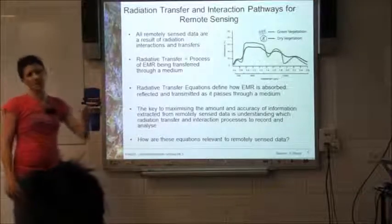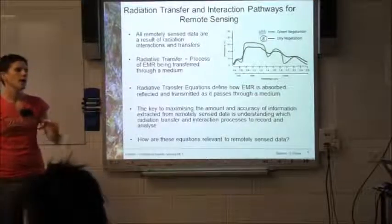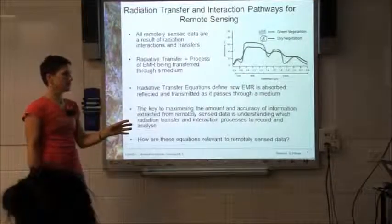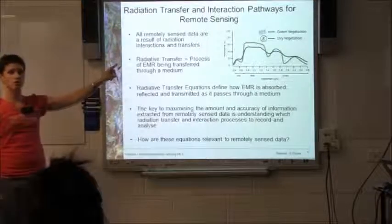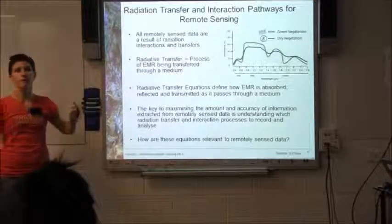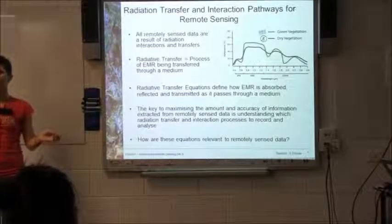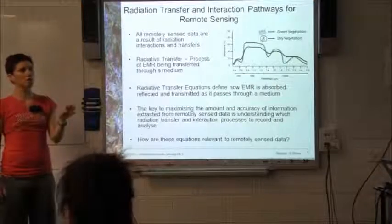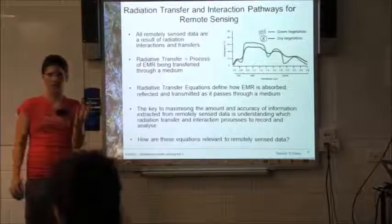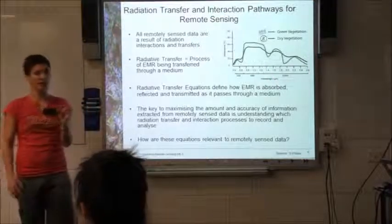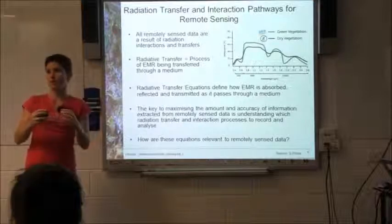If you look at that particular graph, I've got the difference between a theoretical, healthy piece of vegetation and one which is a bit drier. So what are the main differences that you see in terms of those two lines on the graph? More near-infrared by the green vegetation. Anyone want to tell me why? The intercellular structure. So when you've got a nice healthy leaf, the cells within that leaf are nice and pumped up.